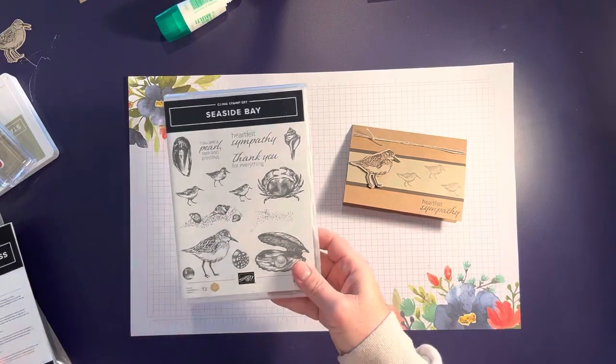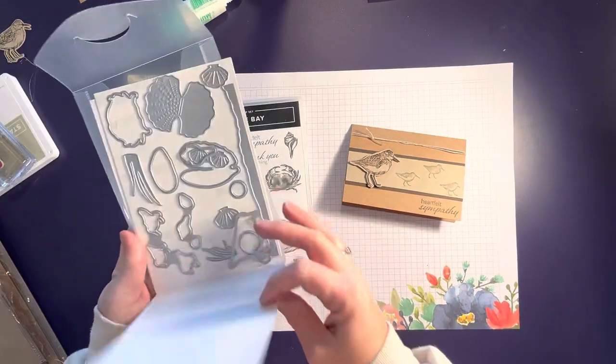We'll use our crumb cake cards and envelopes and the Seaside Bay dies. They are some really great dies.